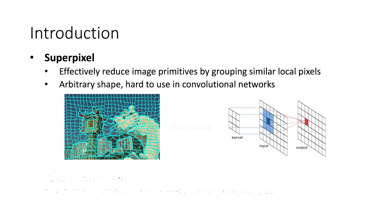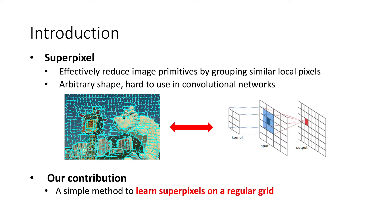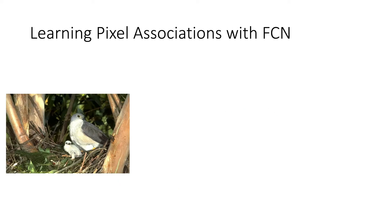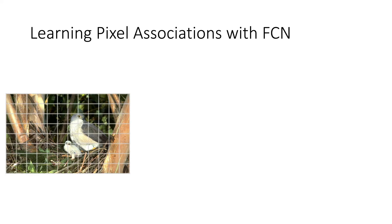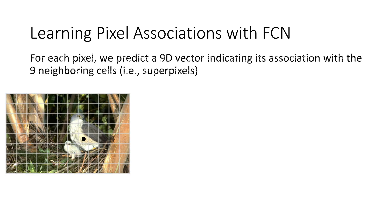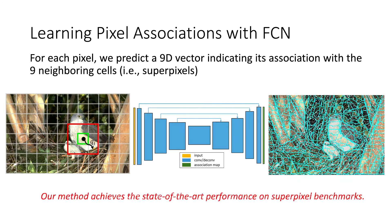In this work, we bridge the gap by proposing a simple yet effective way to learn subpixels on a regular grid. First, we divide an image into a regular grid, where each cell represents a subpixel. Then, for each pixel, we predict how likely it should be assigned to the nine neighboring cells using a fully convolutional network.